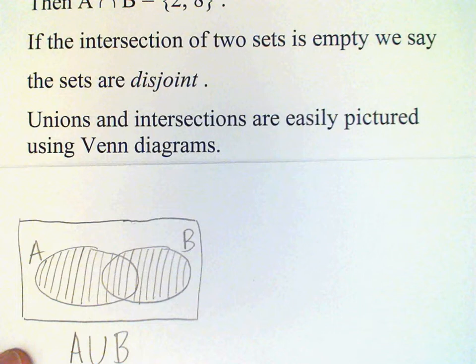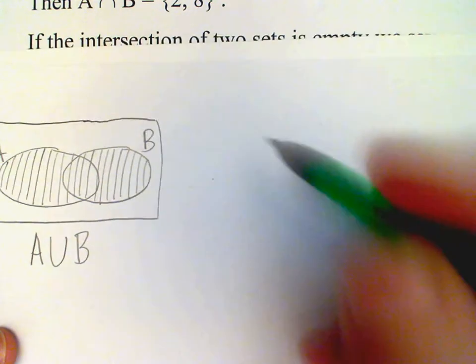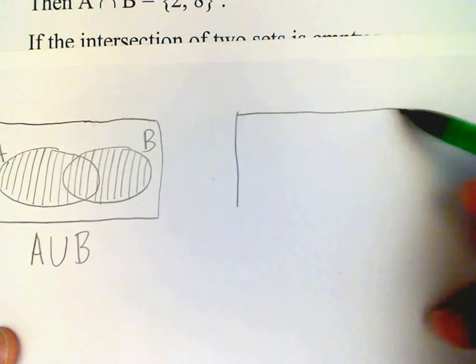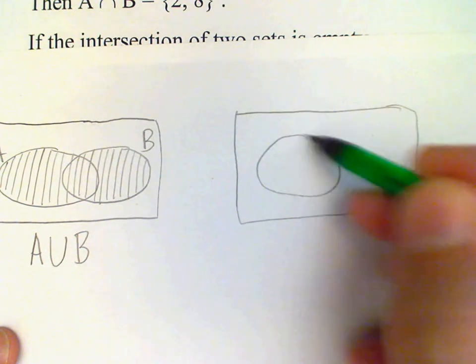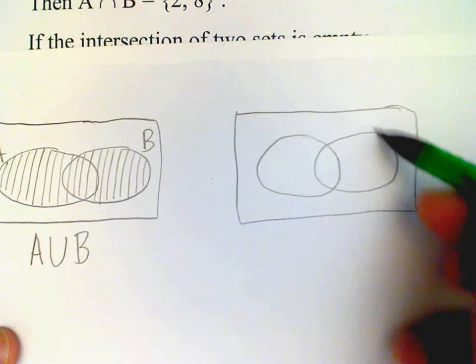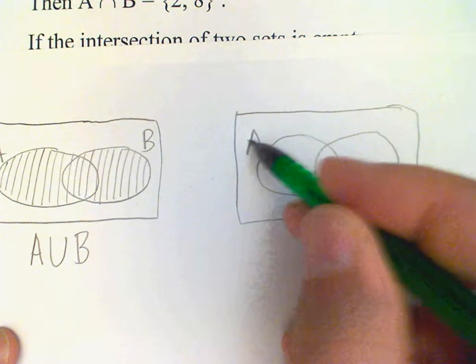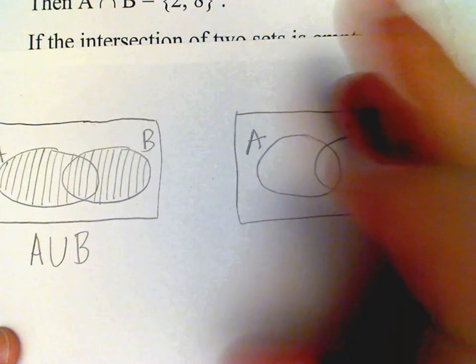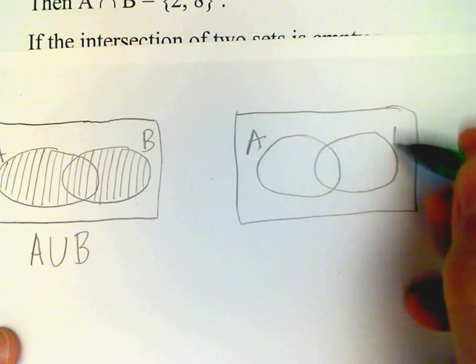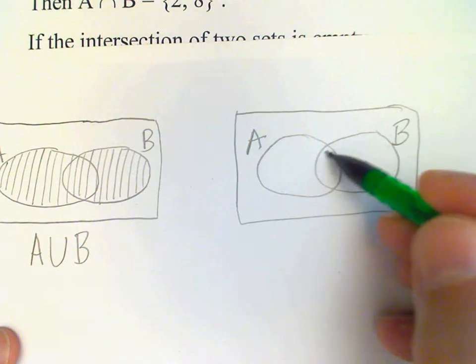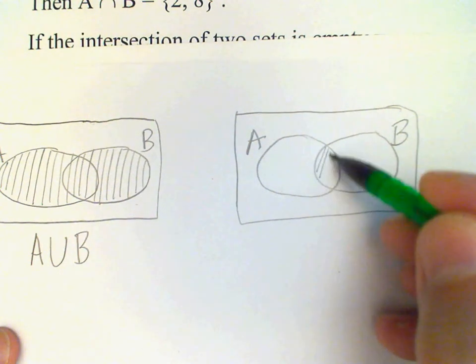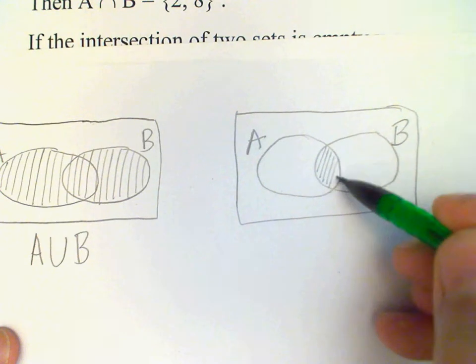Now if I want to represent the intersection, I'll do something similar. I'll get my rectangle, my two sets. And now where am I going to shade? Well, I can almost hear you out there saying in the middle. And that's right. The intersection is right there.